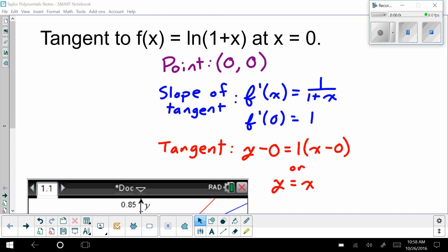So, we've been talking about finding the tangents to functions. For example, if I wanted to find the tangent to the natural log of 1 plus x at x equals 0, we need the point and the slope of the tangent. Well, the point, my x is 0. If I plug 0 in for x to my function, I get the natural log of 1, which is also 0.